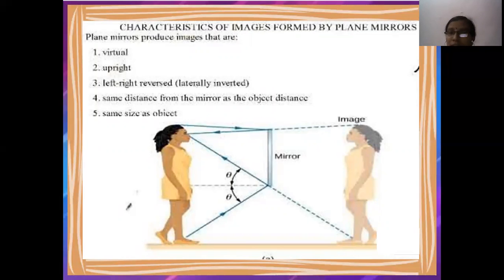It is known as lateral inversion. Next one is the same distance from the mirror as the object distance. If you are standing in front of 1 meter, you will see your image at 1 meter inside the mirror.